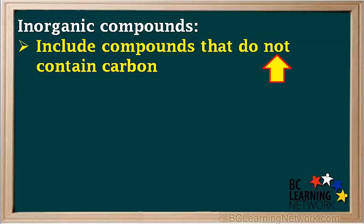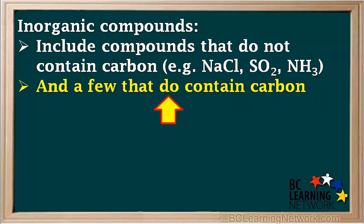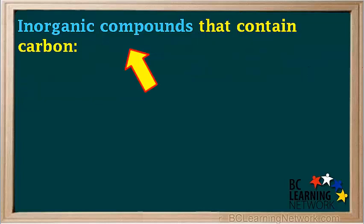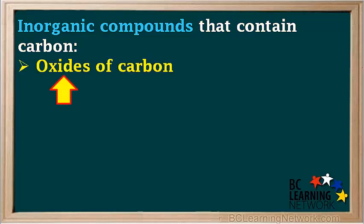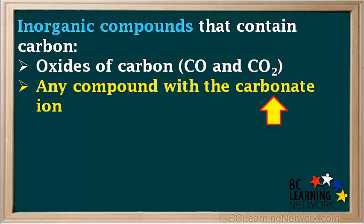Inorganic compounds include compounds that do not contain carbon — for example, NaCl, SO2, and NH3 — but there are a few inorganic compounds that do contain carbon. It is important to know these so we don't mistakenly identify them as organic. Some types of inorganic compounds that contain carbon are oxides of carbon, like carbon monoxide (CO) and carbon dioxide (CO2).